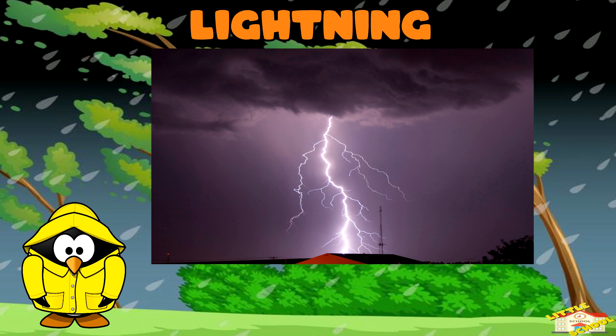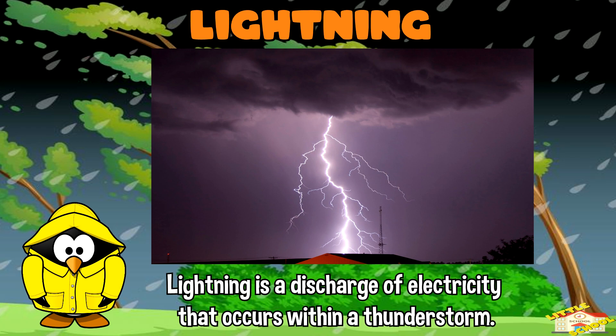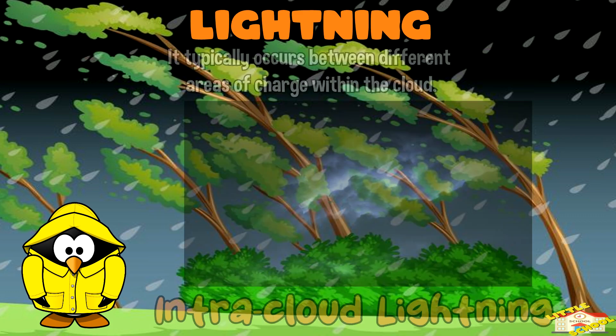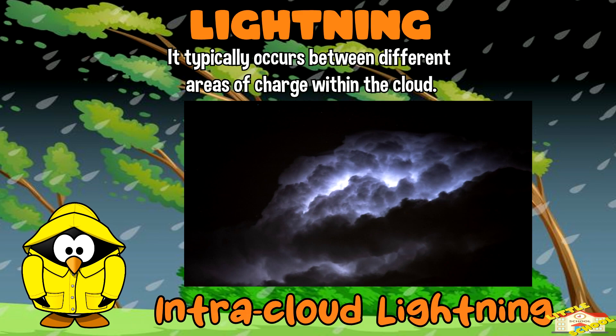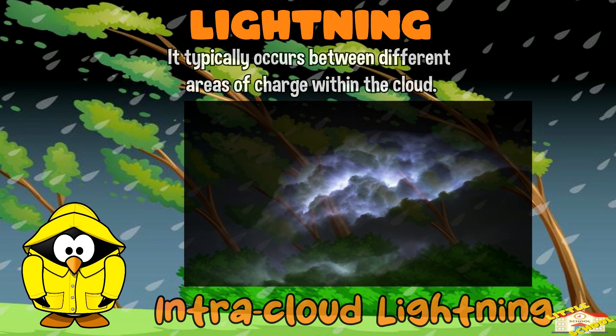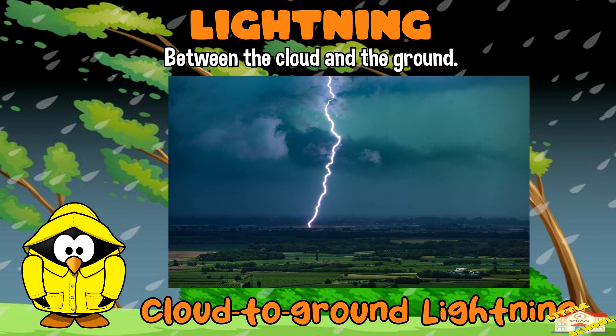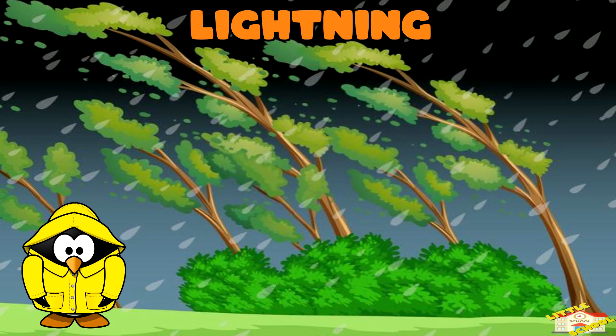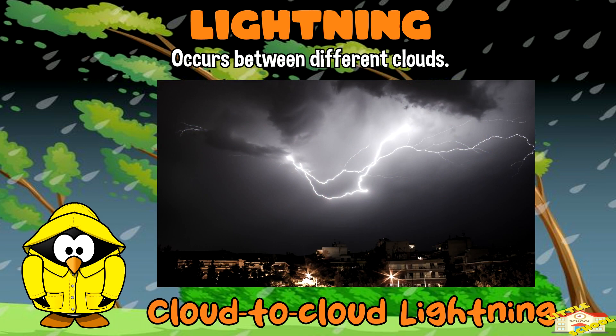Lightning is a discharge of electricity that occurs within a thunderstorm. It typically occurs between different areas of charge within the cloud, also known as intra-cloud lightning. It also occurs between the cloud and the ground, known as cloud-to-ground lightning, or between different clouds,